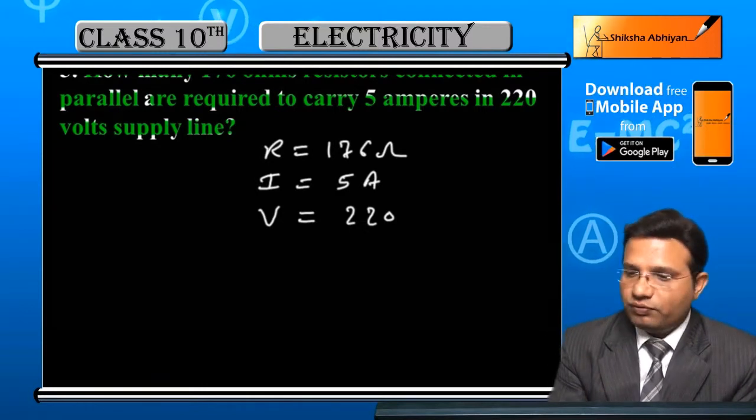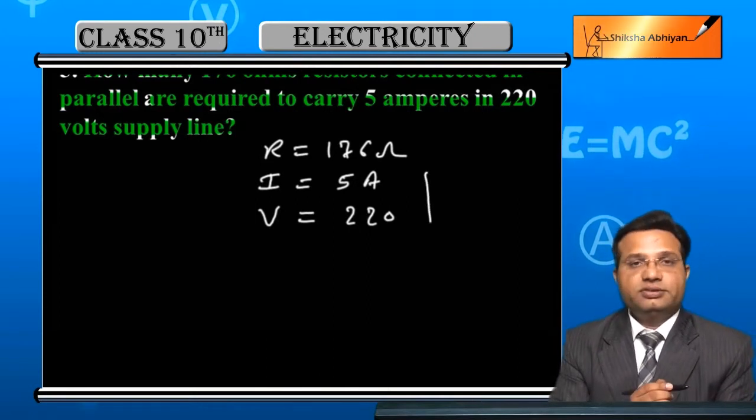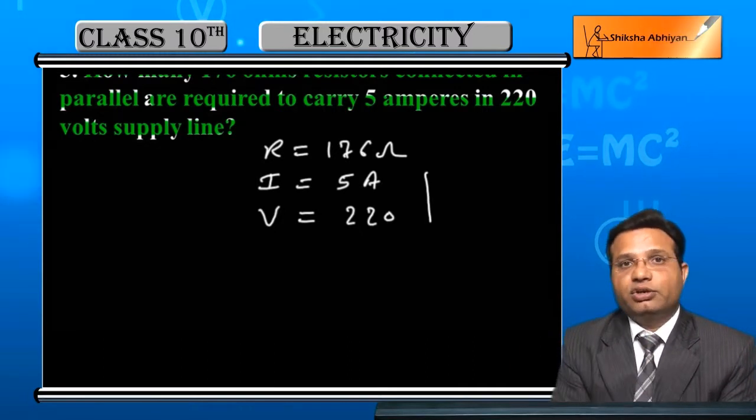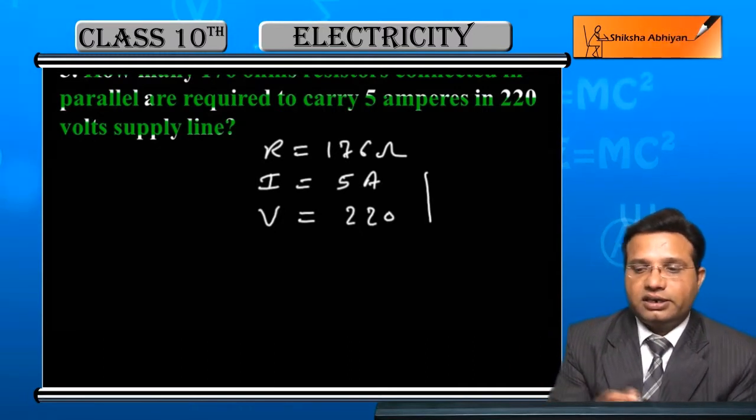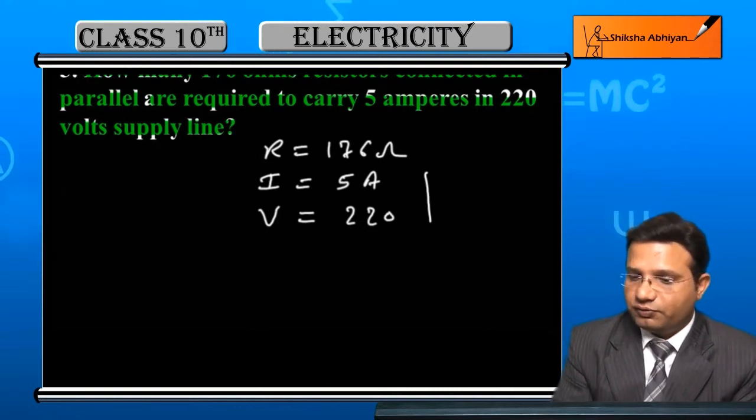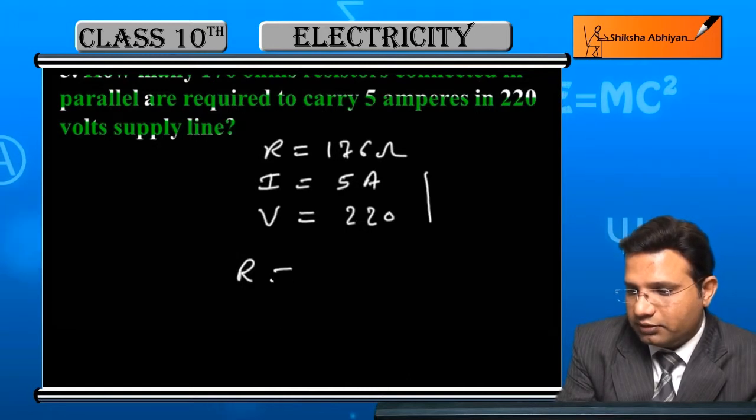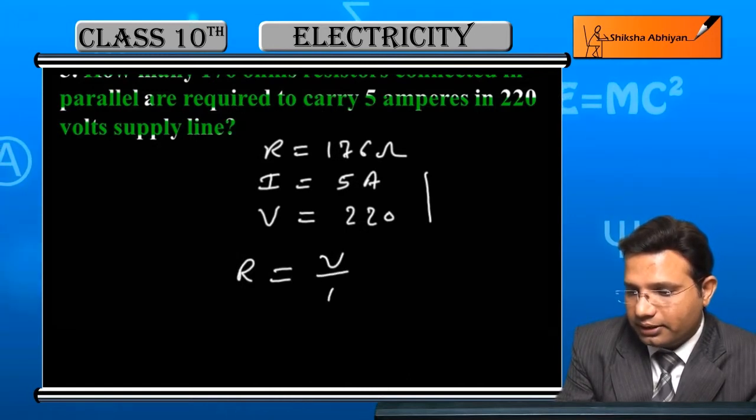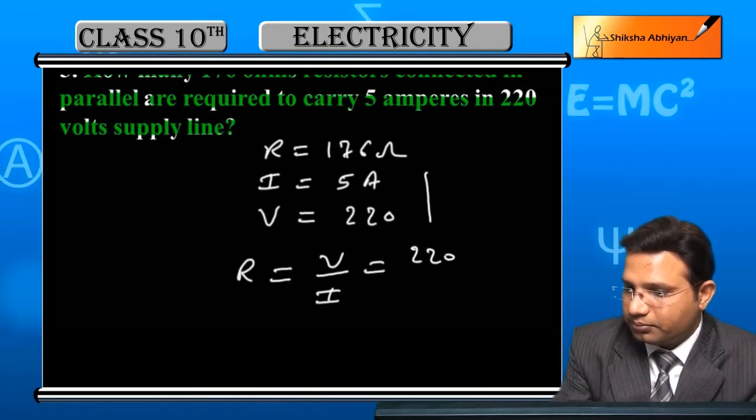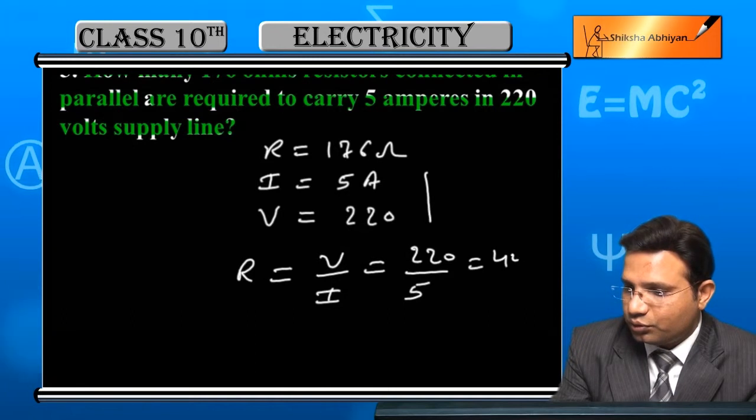First of all, what we will do is we will calculate what is the resistance offered by the supply line, means entire circuit of the supply line when current 5 ampere and 220 volt is the potential difference. For that, this R will be given by V by I means 220 by 5 which is 44 ohm.